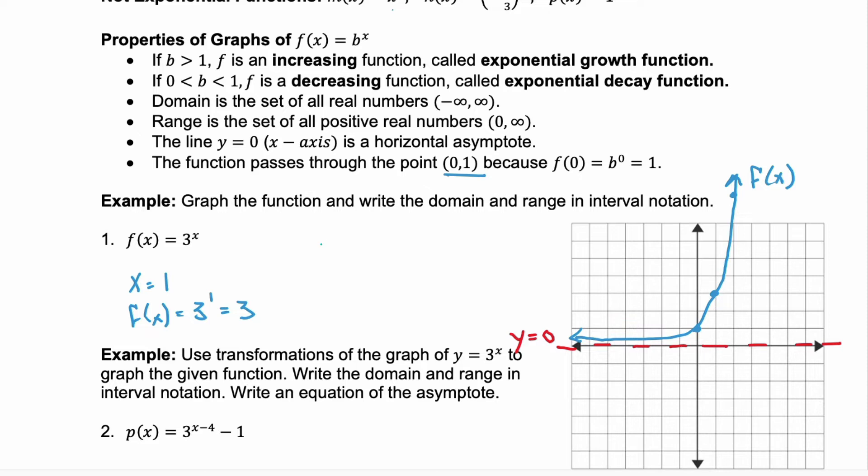Because our next example, we're going to use some transformations on this graph. Now we need to know the domain. Our domain would be what x values can we use in this function, and you can have any x value. So it's all real numbers, negative infinity through positive infinity. And then our range here is going to be the lowest y value, which is 0. Remember, it's not including 0. That's our asymptote, and we never touch it. And our graph is going upwards, it's increasing. So our range is going to approach infinity.